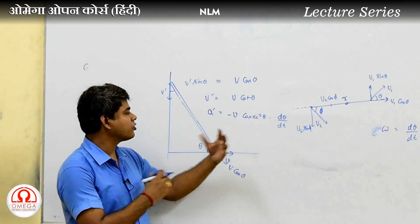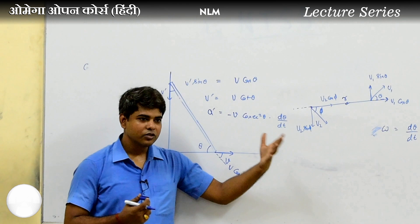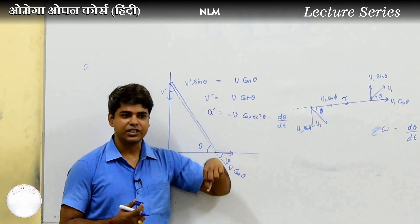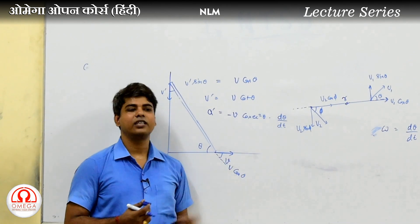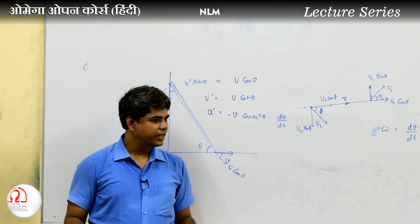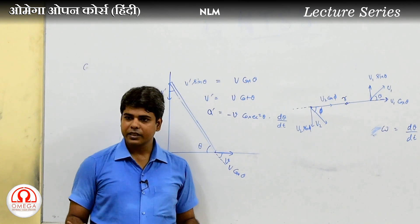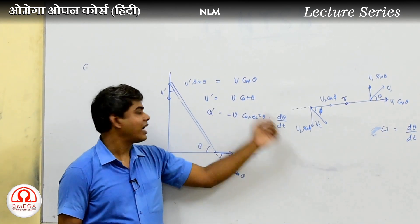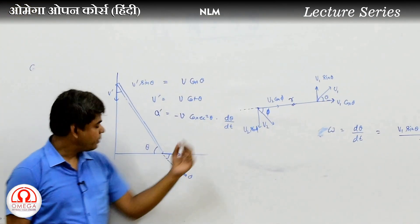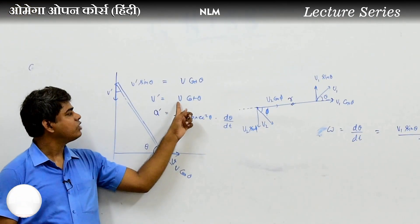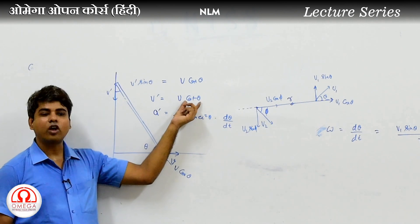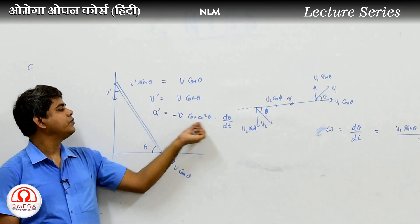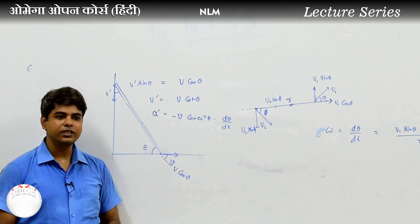When you differentiate using the chain rule, you differentiate the inside term, which gives dθ/dt. The value is a' (acceleration of the second body). If v is not variable — that is, if we take constant speed — then v is constant and only cot theta is variable. Differentiating gives: minus v cosec squared theta into dθ/dt.